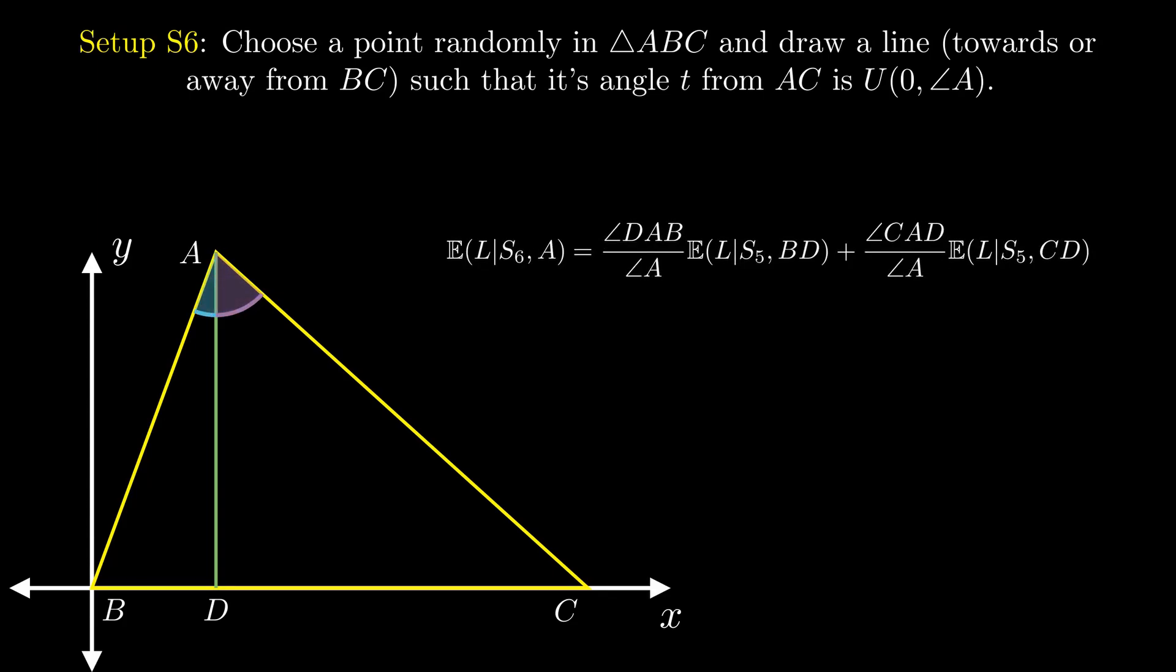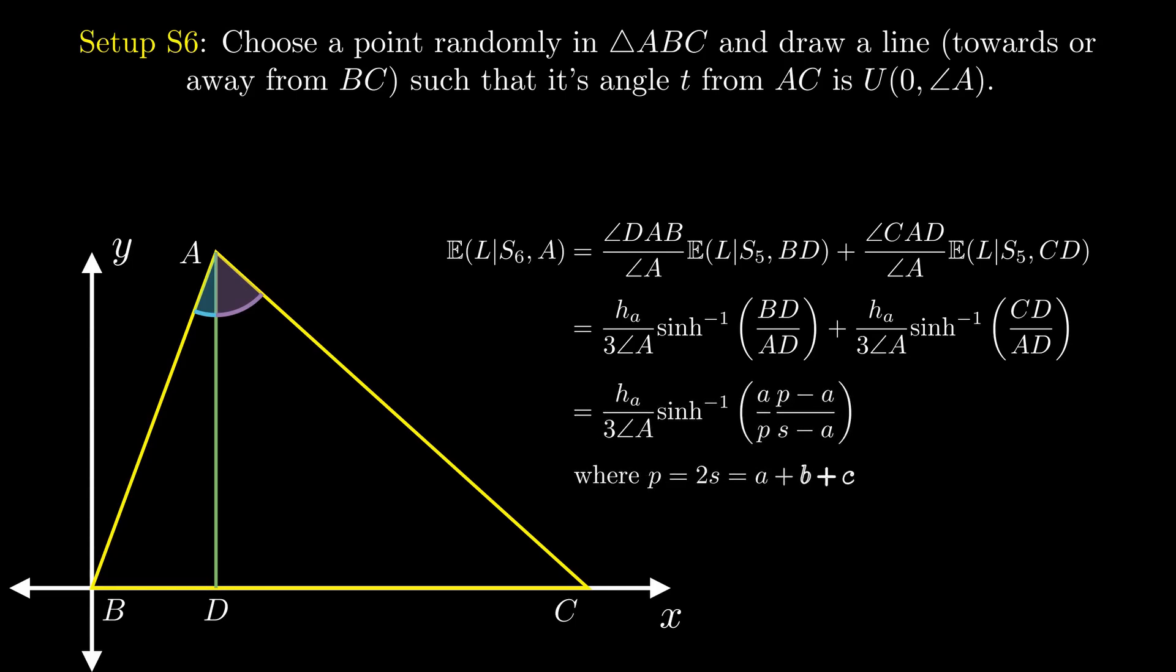The expected length of setup 6 with vertex A then will be tan inverse of BD by AD by angle A times the expected value of setup 5 with segment CD. After some boring simplifications, this can be written compactly as Hₐ by 3 times 1 by angle A times the inverse hyperbolic sine of A into P minus A divided by P into S minus A, where P and S are the perimeter and the semi-perimeter of the triangle respectively.